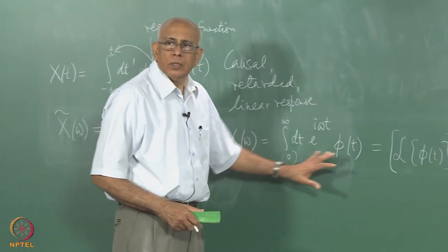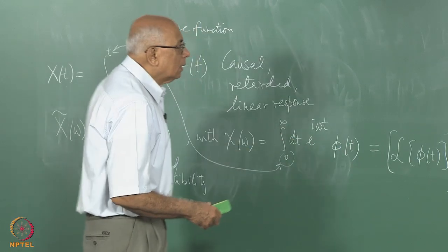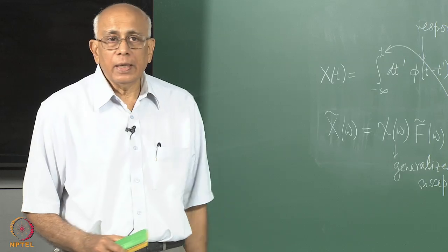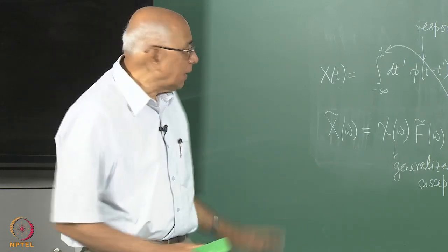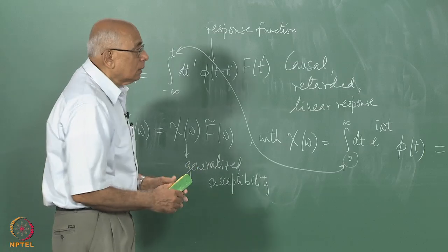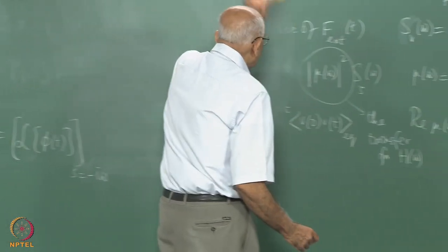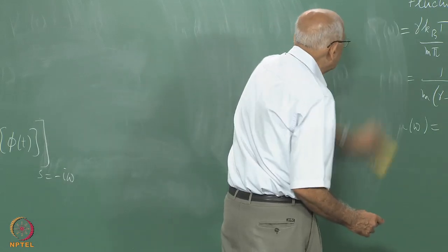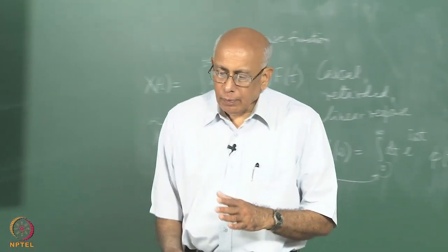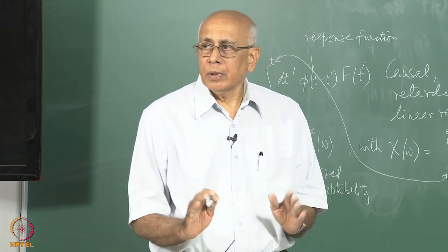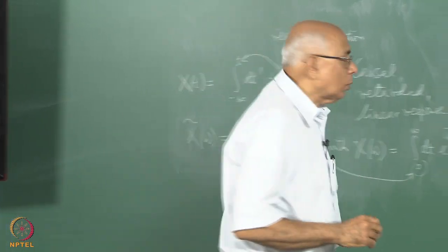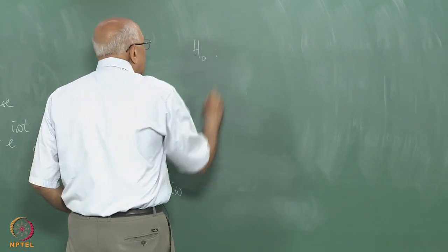So much for the general case — we still do not know what φ(t) is. In the kind of problem we have been looking at, φ(t) turns out to be an autocorrelation function in the absence of the external force. Here is where the formalism of linear response theory comes in. You start with a system in thermal equilibrium at temperature T with an equilibrium density matrix ρ_eq = e^{−βH₀}, and you can find the average value of any observable by the prescription of equilibrium statistical mechanics.